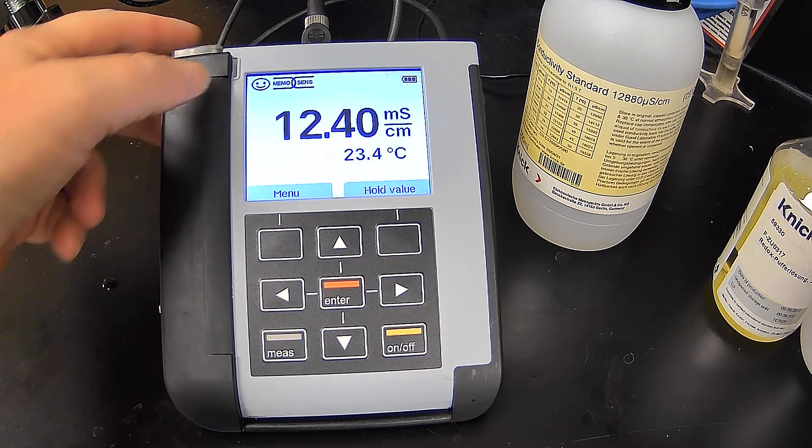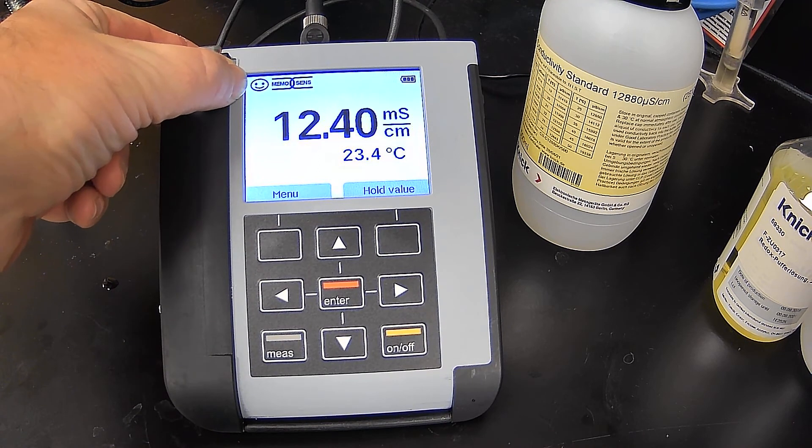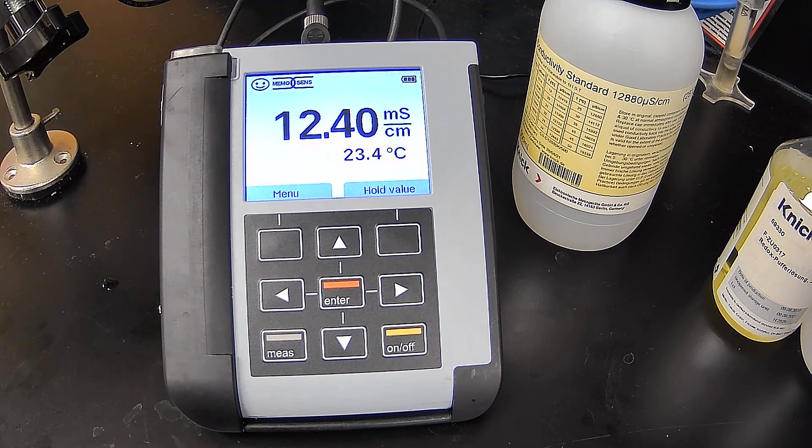And you'll also see that the smiley is there, which is what we like to see. So there's nothing out of order with the cell constant. It took the calibration and we're good to go.